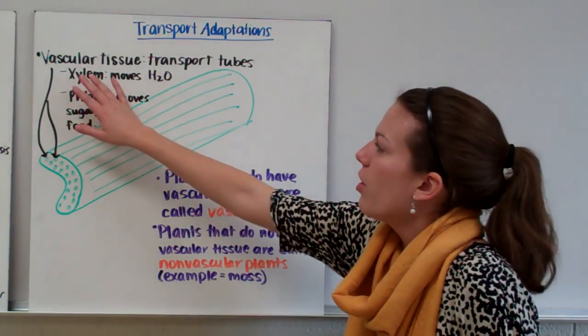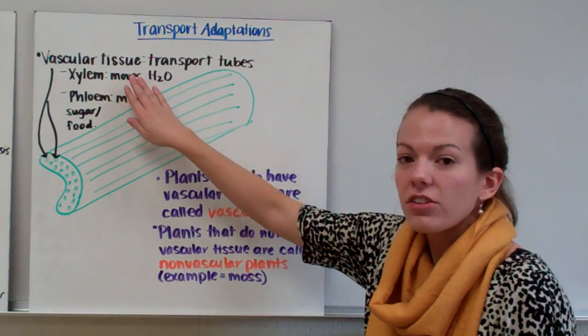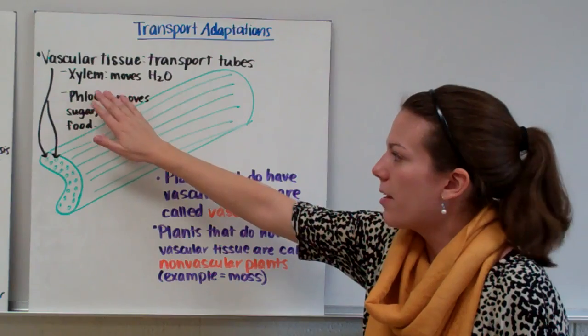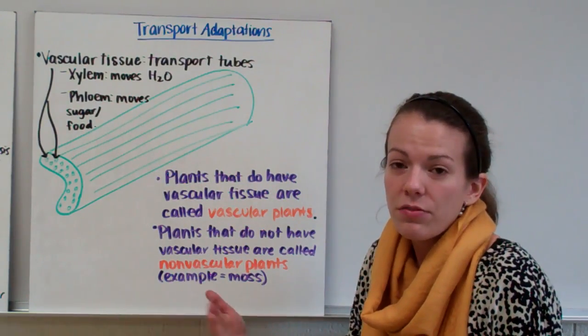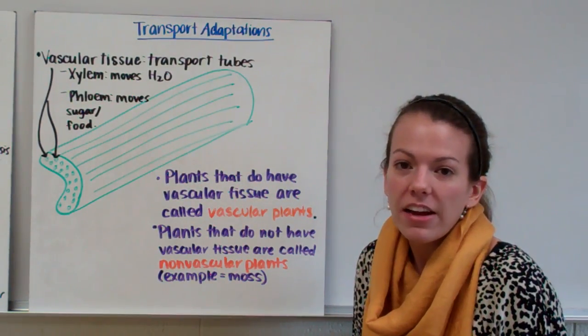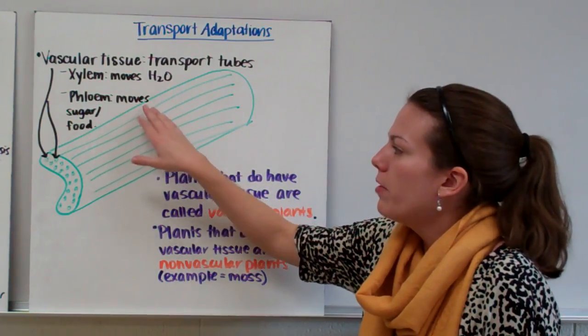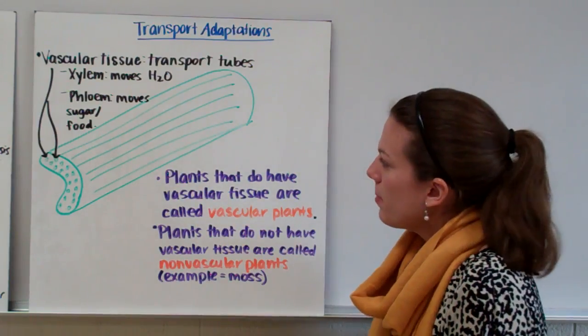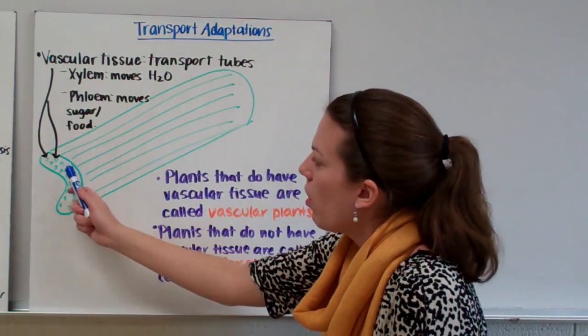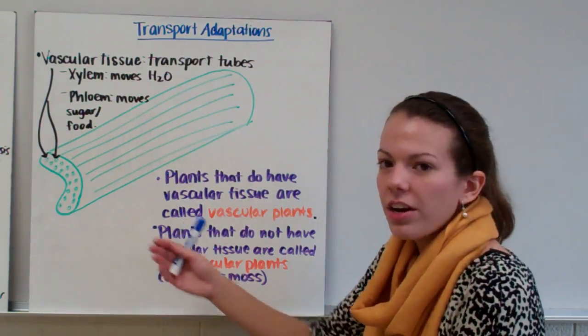These transport tubes are called vascular tissue. Now there's two types of transport tubes. There's xylem and phloem. And the two different types are different based on what they carry or what they transport. Xylem moves water and then phloem moves sugar or food. And if you look at celery, the little holes are where those tubes start in the celery.